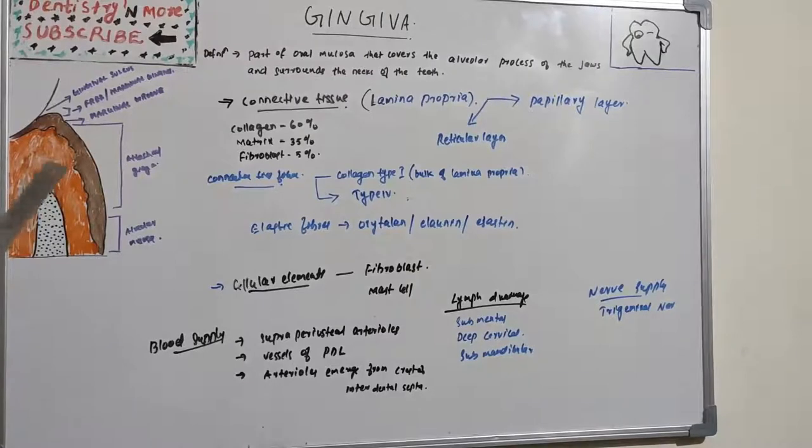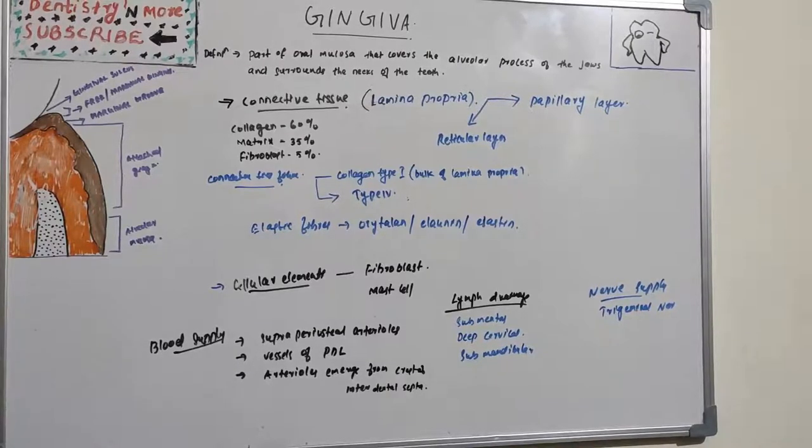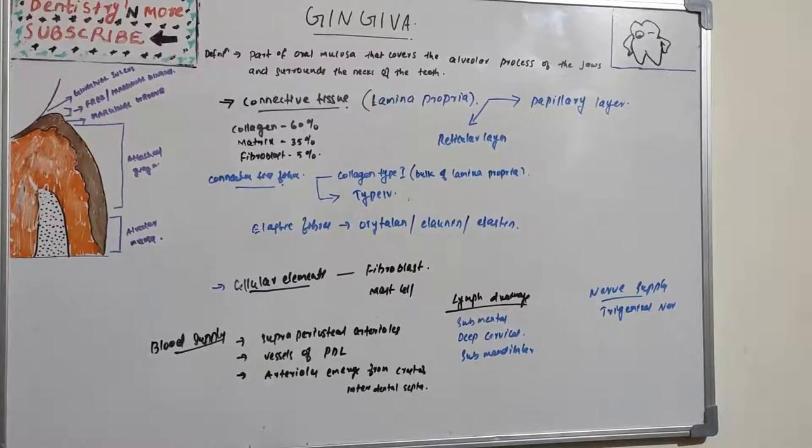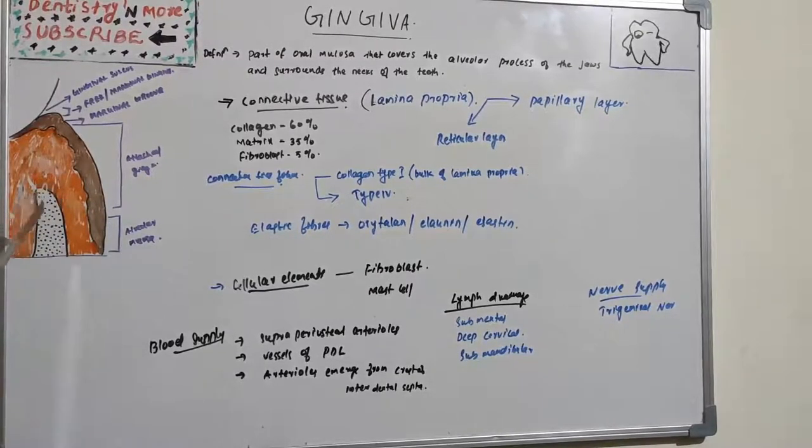Connective tissue has cellular and extracellular compartments composed of fibers and ground substance. Ground substance is basically composed of proteoglycans, hyaluronic acid, chondroitin sulfate, glycoproteins, mainly fibronectin, which binds fibroblasts to the fibers and many other components of intercellular matrix.